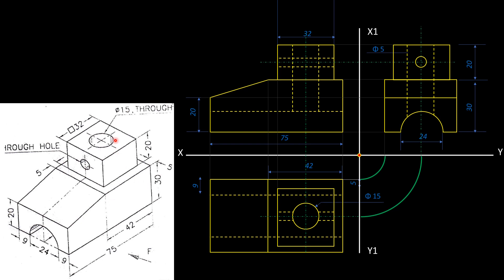This is the center line. There is a 5mm spacing offset on the right side, so the right side is 5mm offset, giving a 32mm dimension. That is the front view of the object, and the solid is complete.